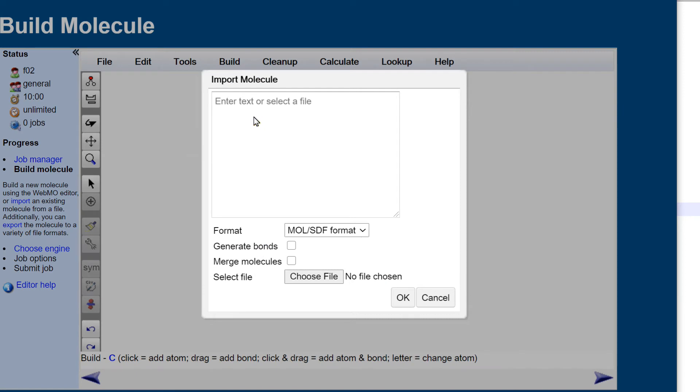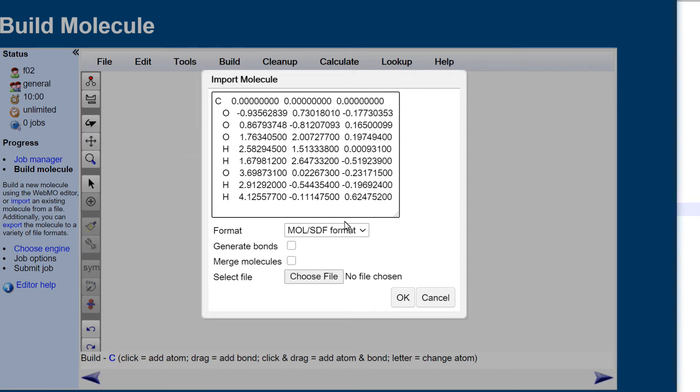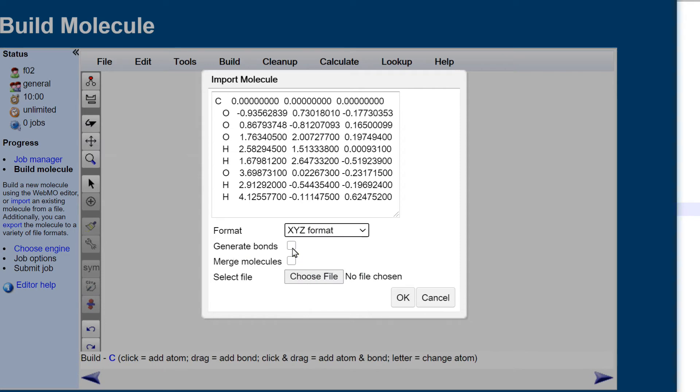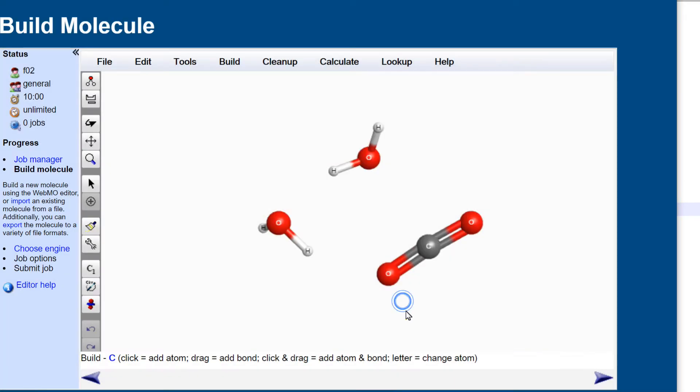File, Import Molecule. Format XYZ. Check to Generate Bonds.